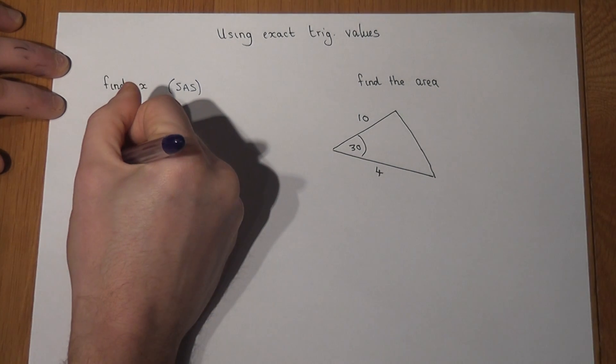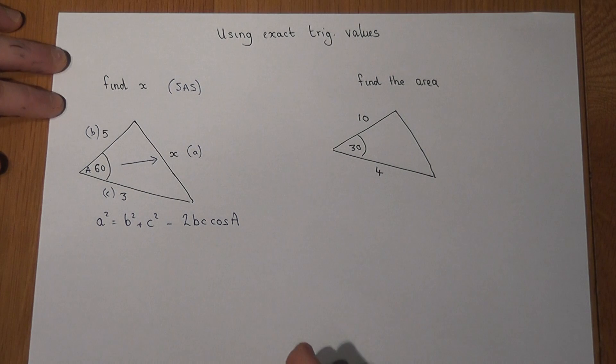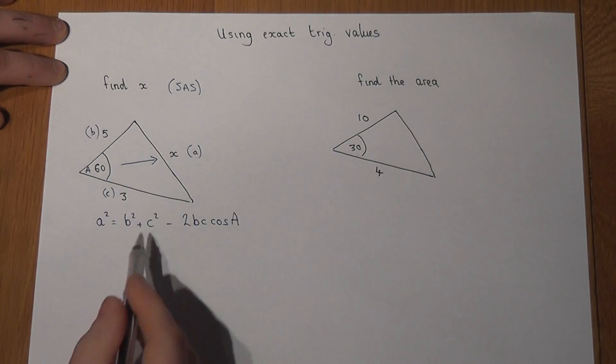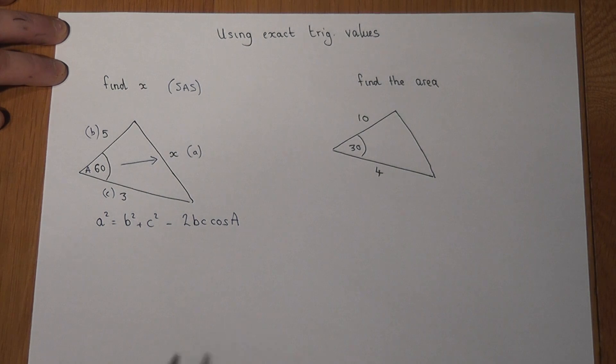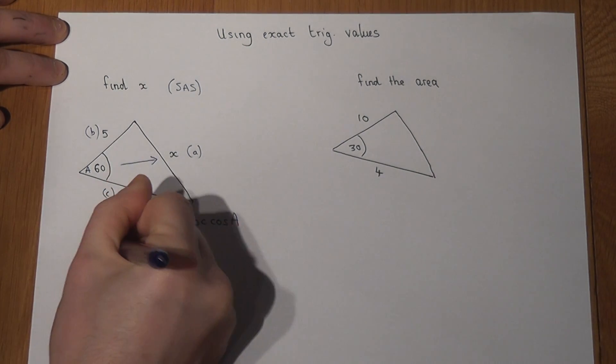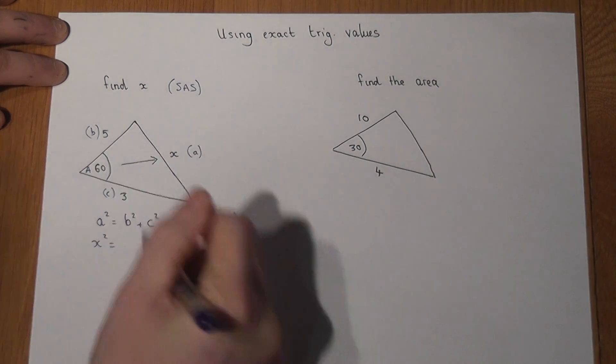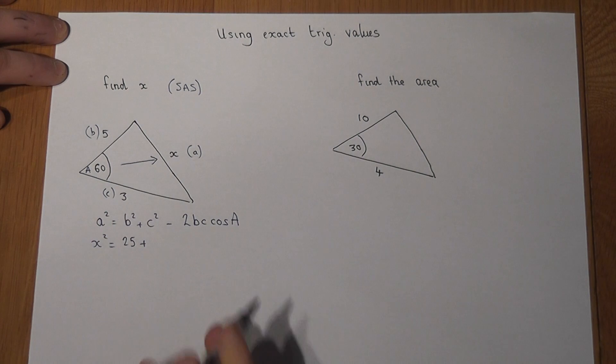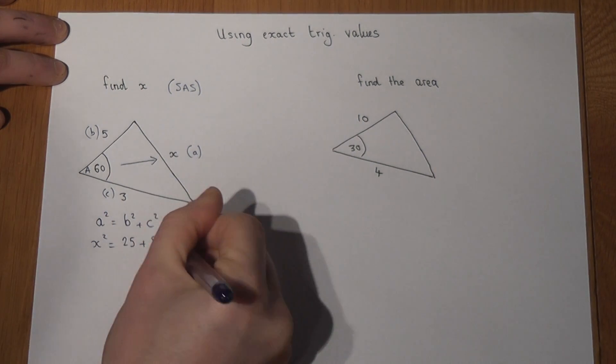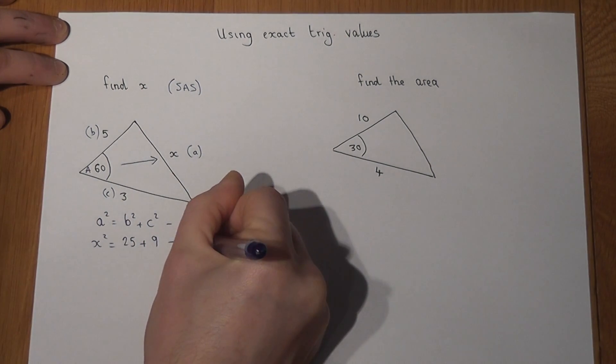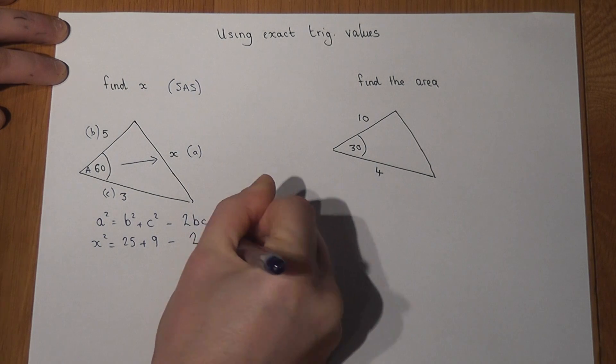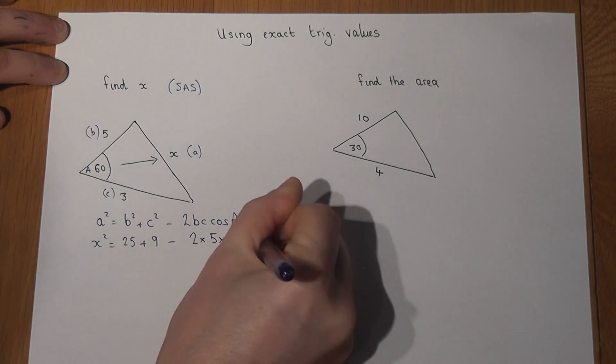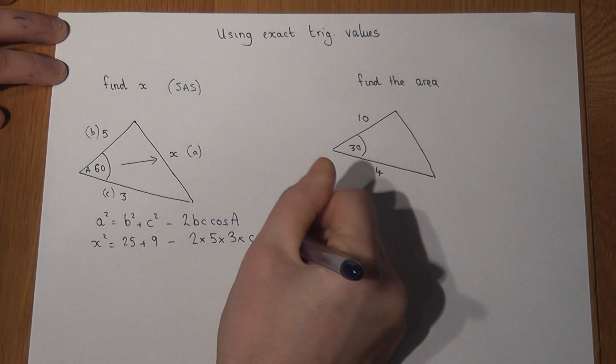So I need to substitute in the values to this equation. So x², the side I want, is b² which is 25, c² which equals 9, take away two lots of b times c times cos of the angle.